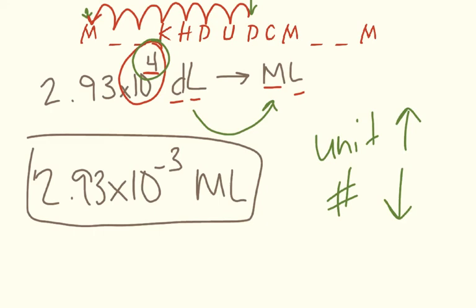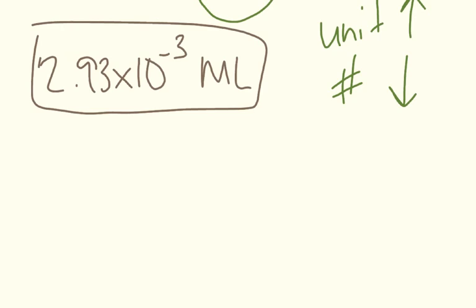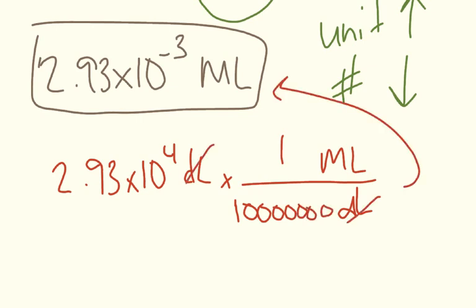If that way is not comfortable for you you can always go back to the original way which is using a conversion factor. And you can do that the exact same way that we've been doing it. So for example you can set it up like this. 2.93 times ten to the fourth deciliters. Deciliters goes on the bottom. Megaliters goes on top. Megaliter is larger so I'll put a one. Deciliter is seven spaces so we're going to fill this spot with seven zeros. Calculate through and you'll get the same answer that we did up here.